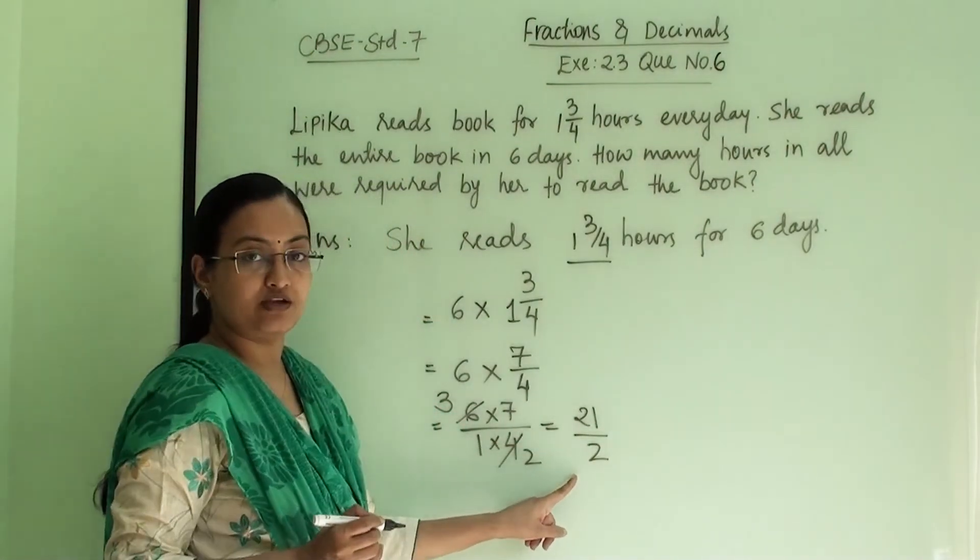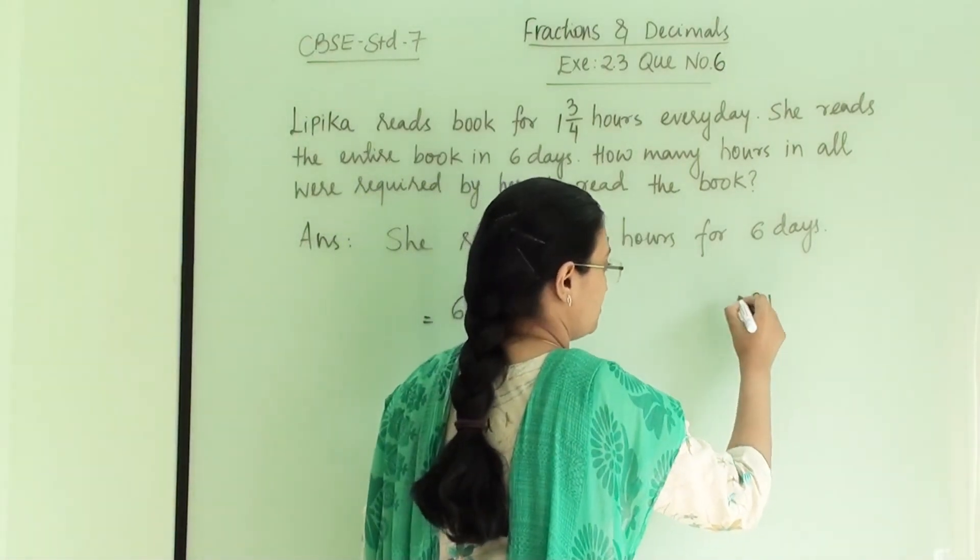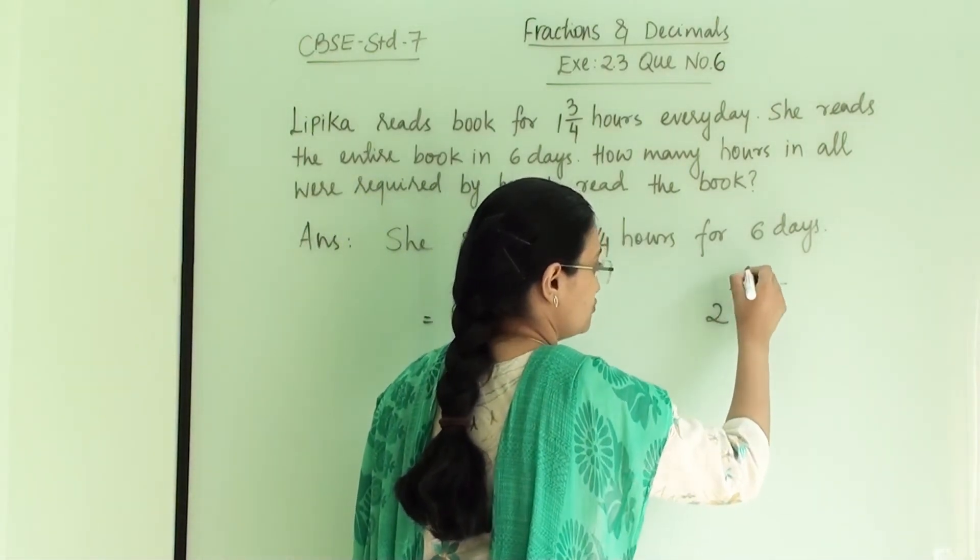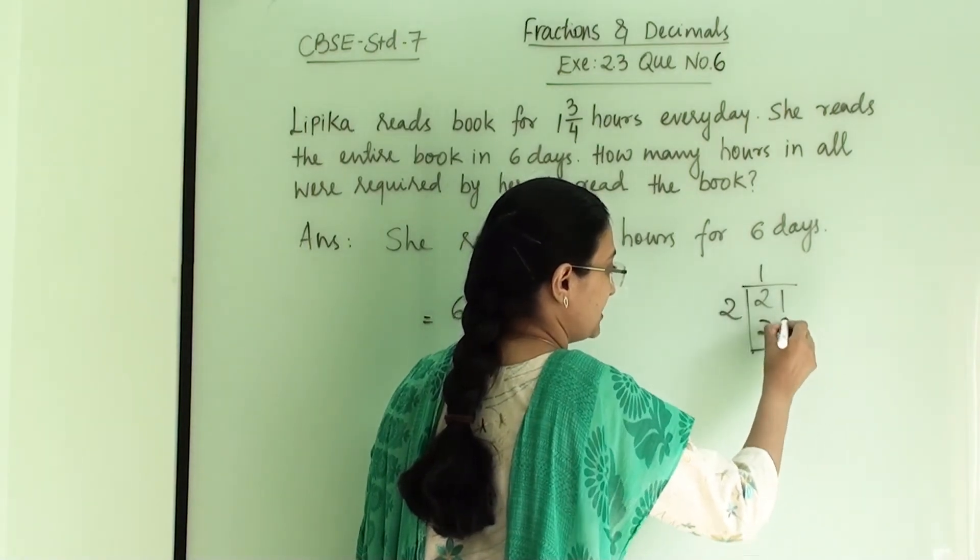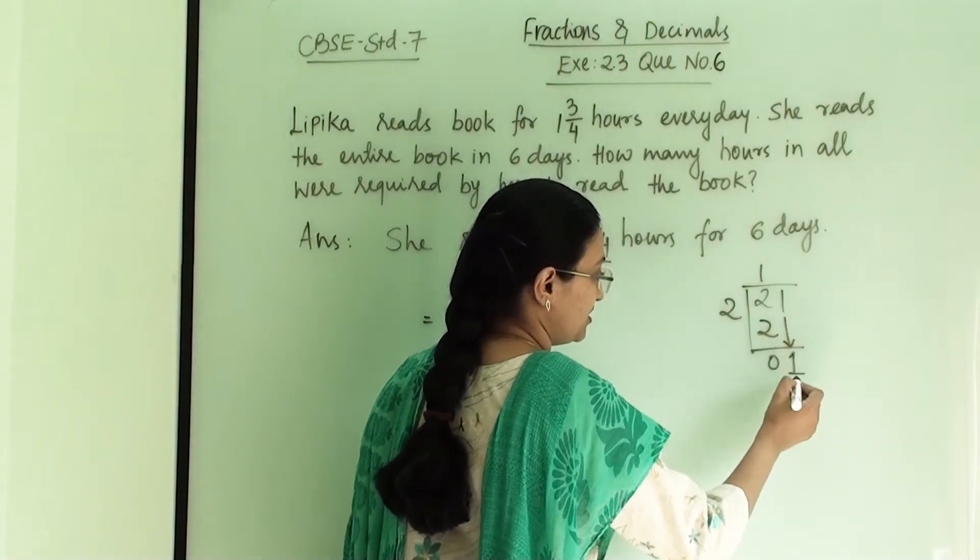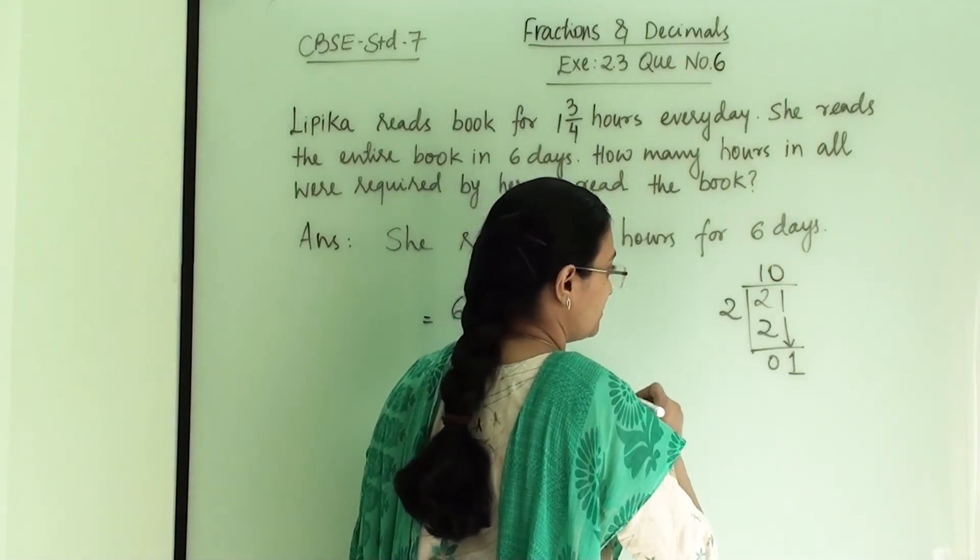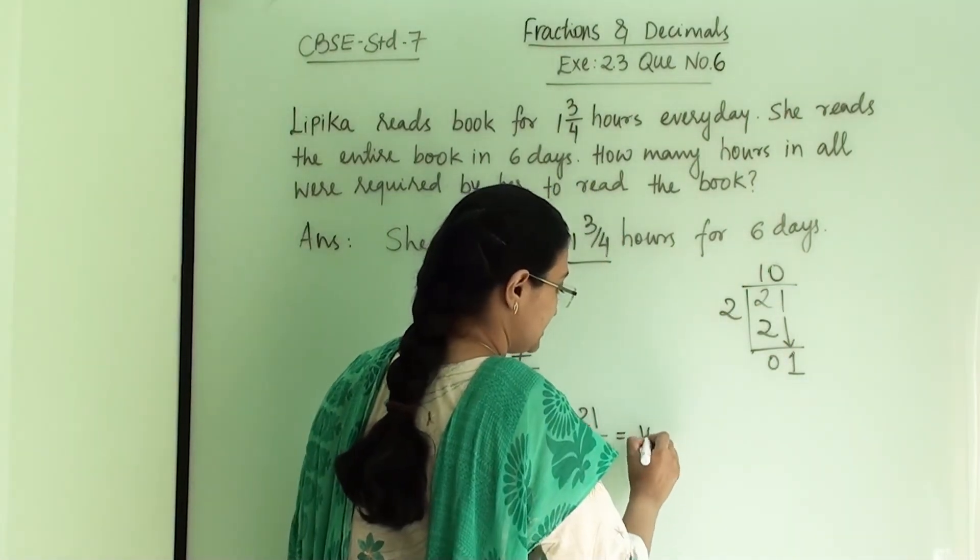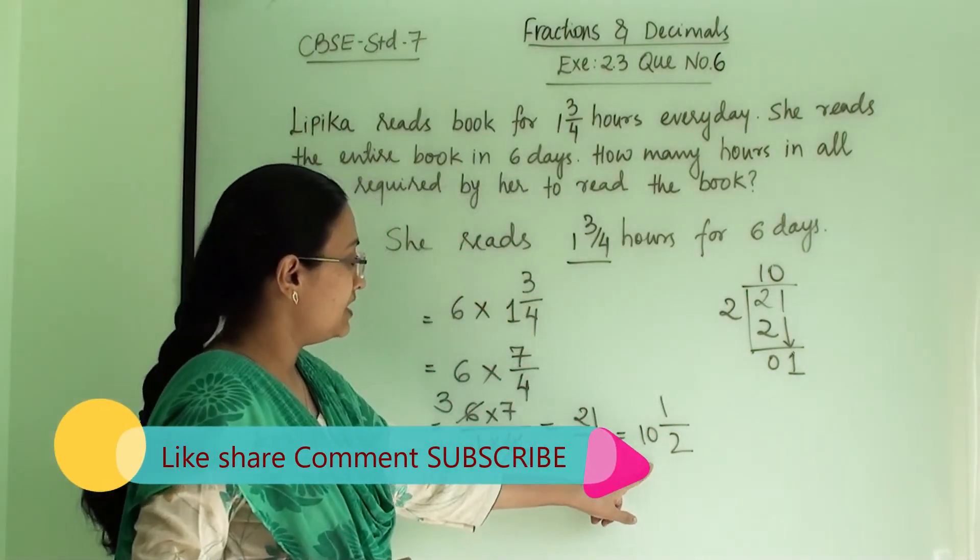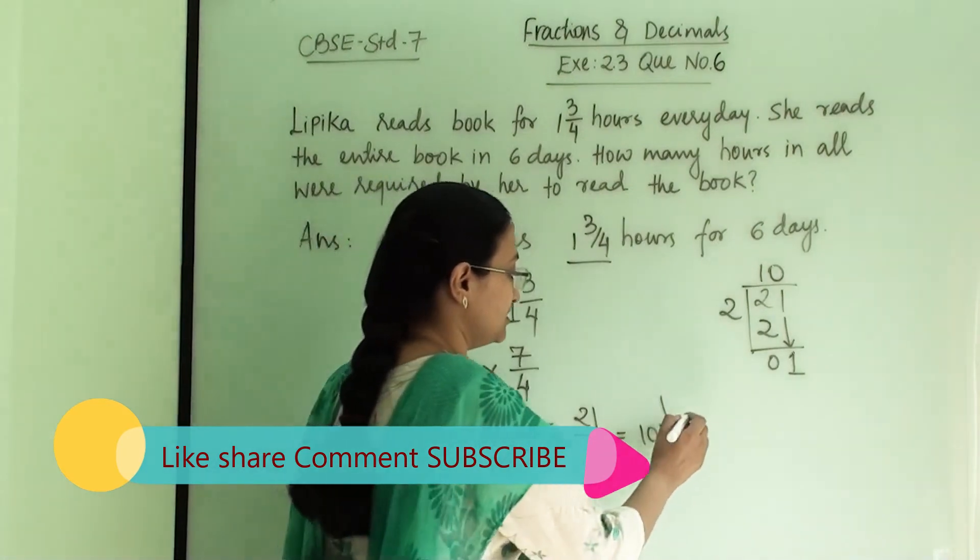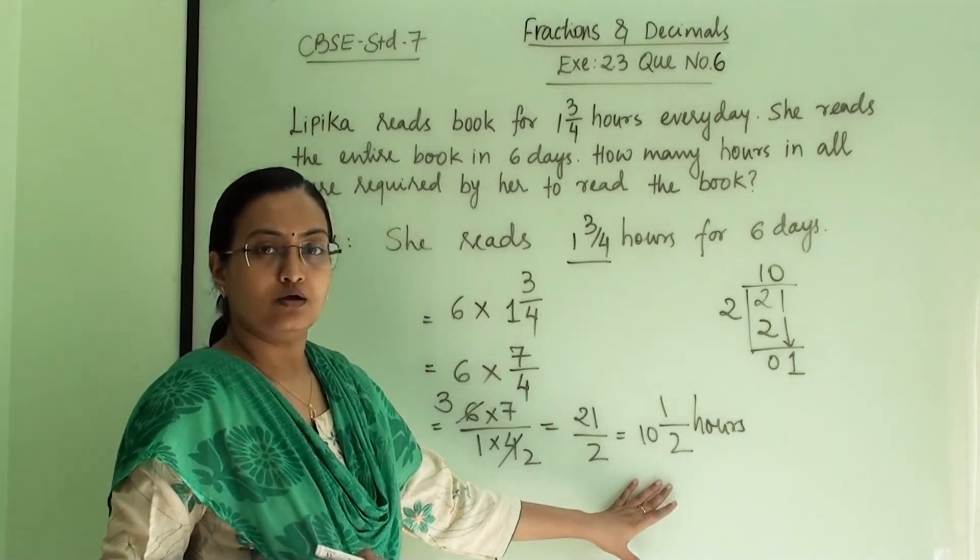21 divided by 2, again we have to convert it into mixed fraction. So 21 divided by 2. 2 tens are 20, we will get 10, and 1 that we have to take from here. Now 1 we cannot divide, so here we will put 0. So the answer is 10 1 by 2. 10 1 by 2 is our answer. So this many hours she will read to complete the book.